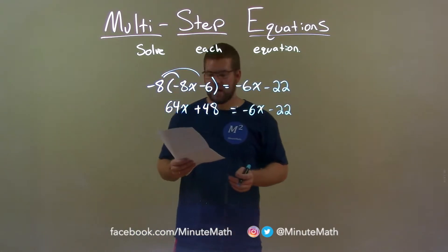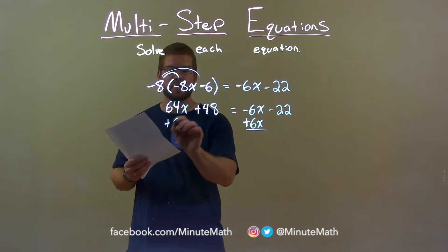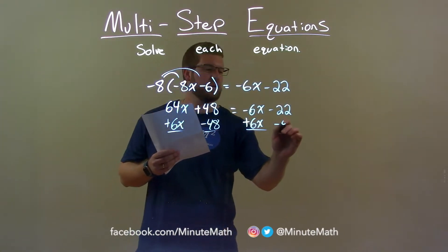I still want to get x by itself. So in doing that, I'm going to add 6x to both sides, combine my like terms, and I'm subtracting 48 to both sides.